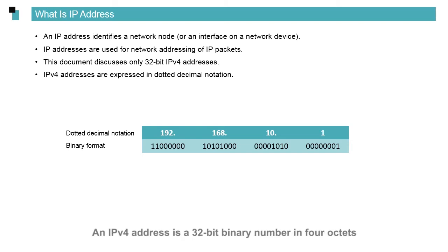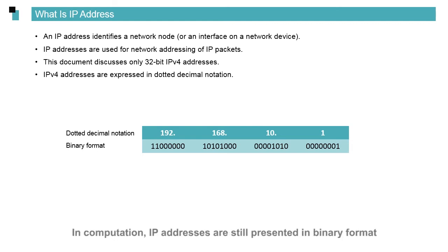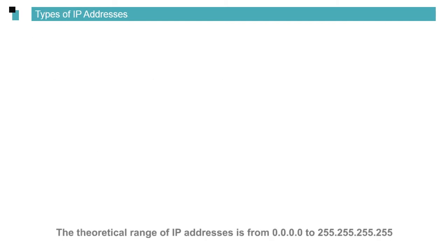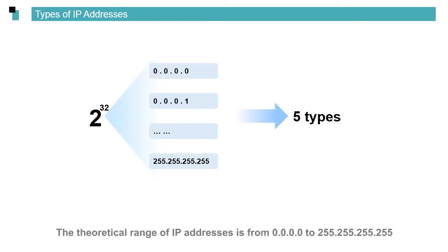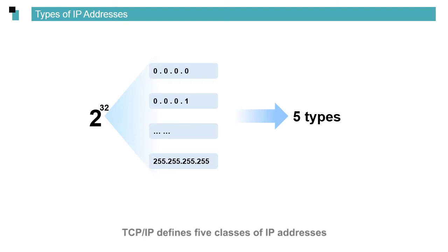An IPv4 address is a 32-bit binary number in four octets. IPv4 addresses are usually represented in dotted decimal notation. In computation, IP addresses are still presented in binary format. The theoretical range of IP addresses is from 0.0.0.0 to 255.255.255.255.